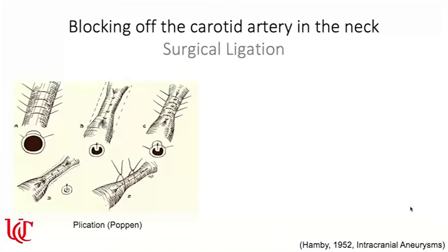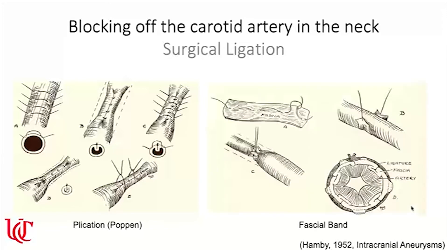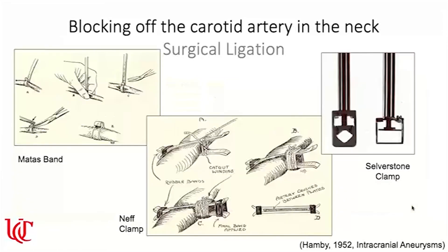They could also block off the carotid artery in the neck surgically — sewing the artery together to stop blood flow over time. One method used a strip of fascia wrapped around the carotid and tied shut. They then developed devices like the Matas band, the Neff clamp — two plates tied together with rubber band on one side and catgut on the other, crushing the artery between the plates — and the Silverstone clamp, which placed something around the bottom of the artery and then clamped down on it.